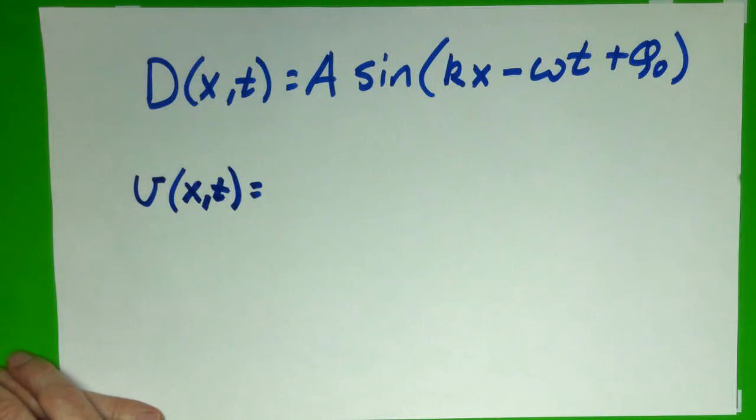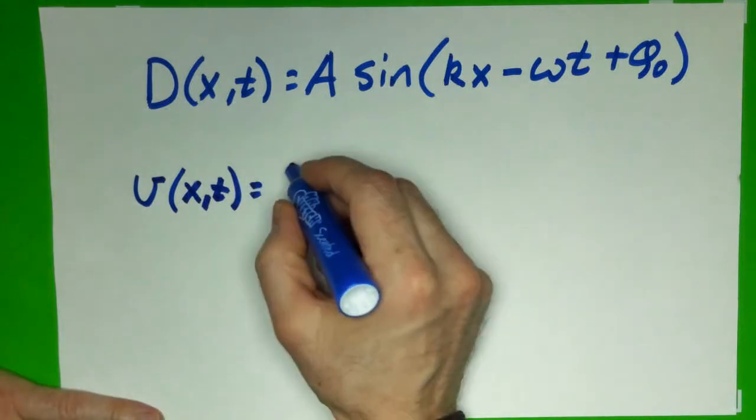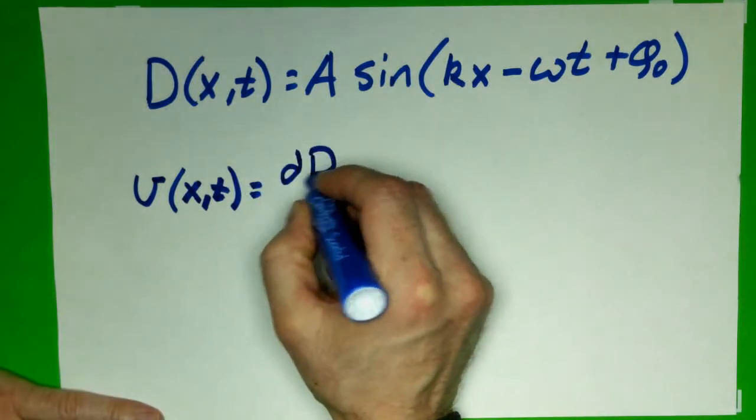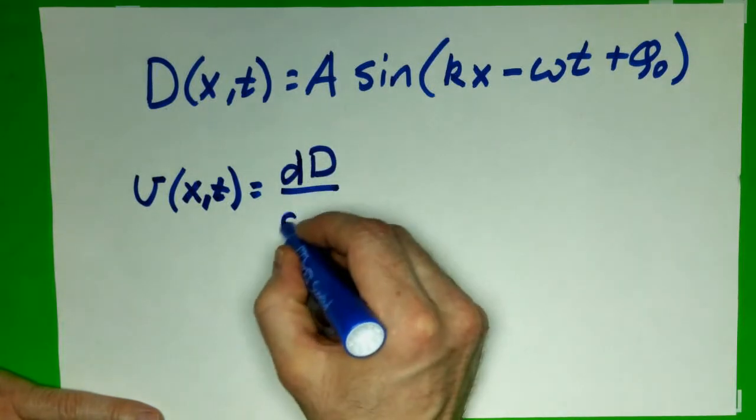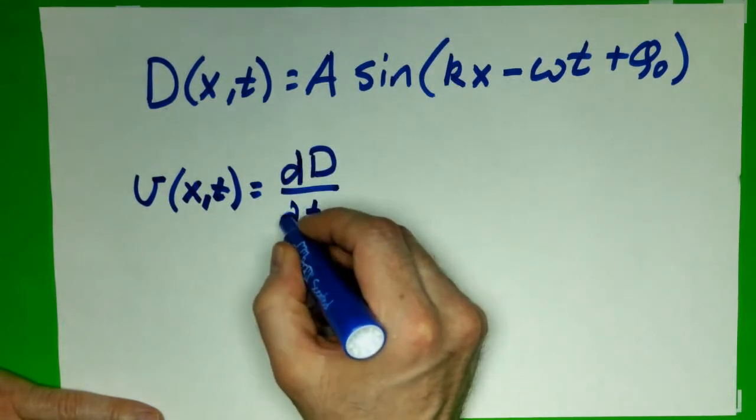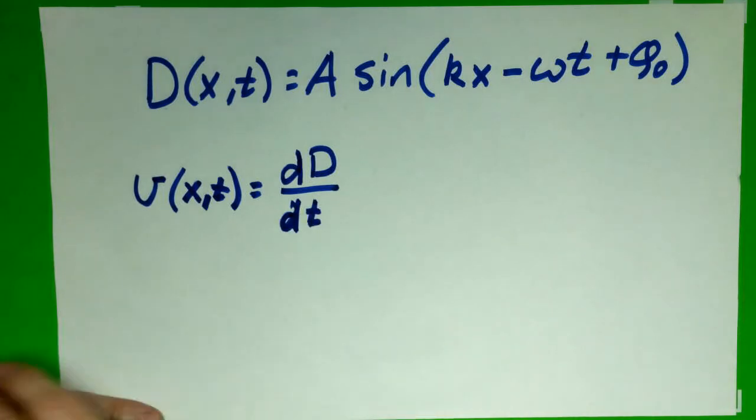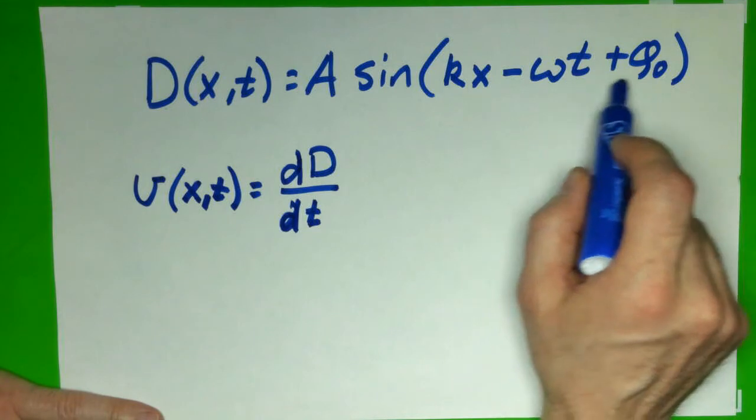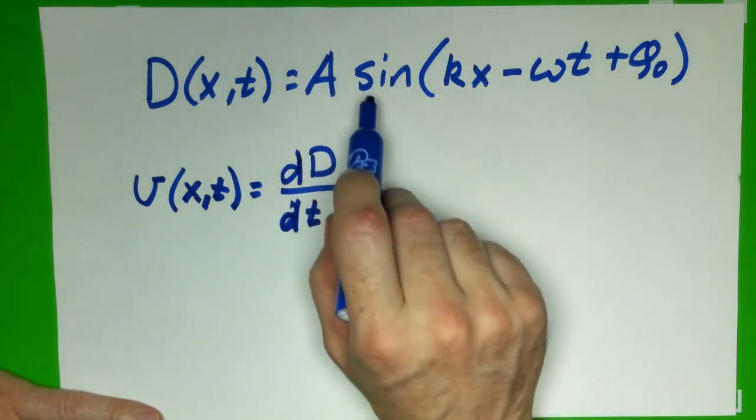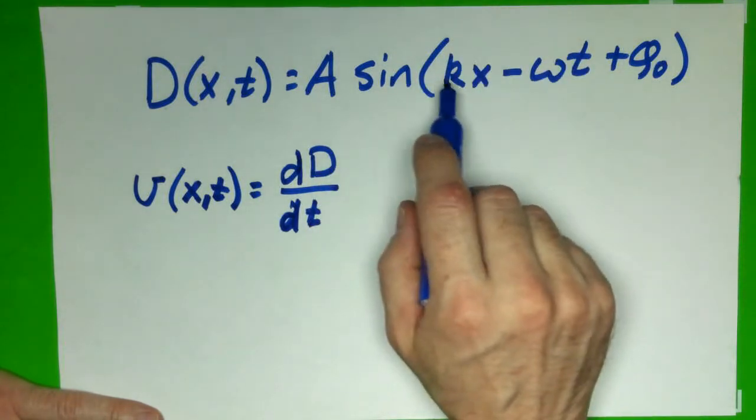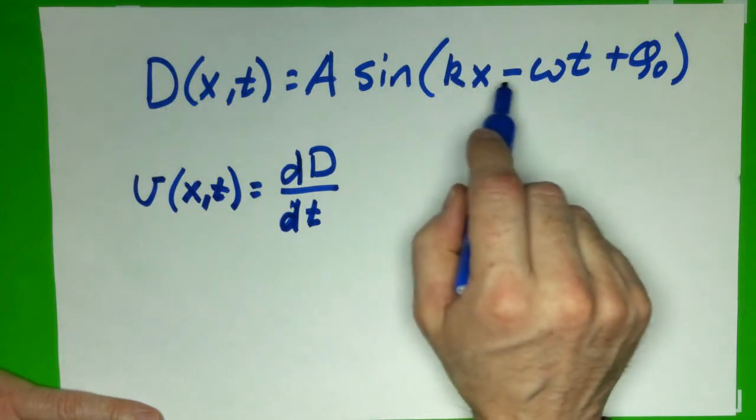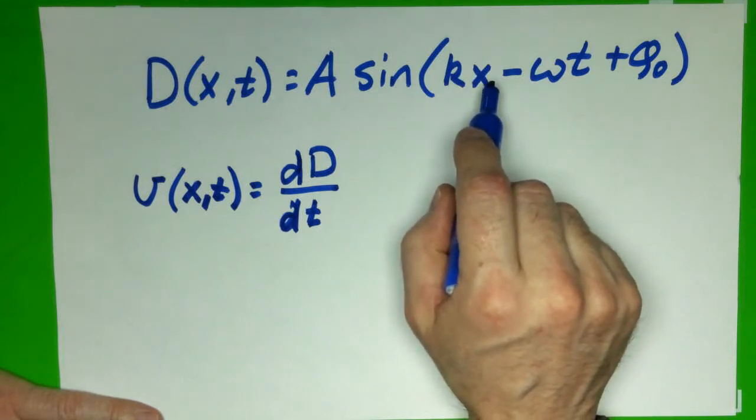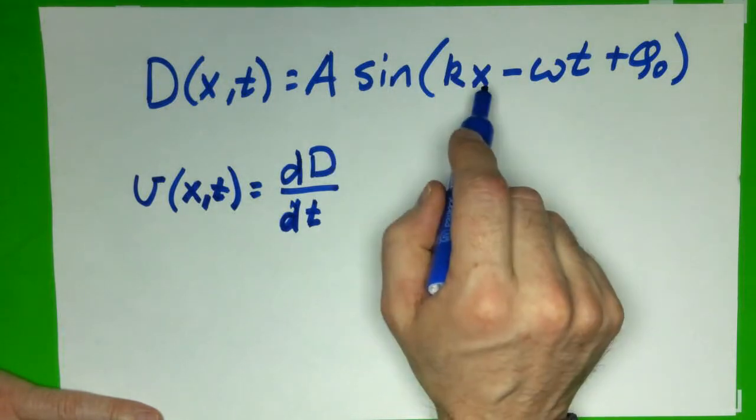So let's do that together. Derivative of D with respect to time. Where does time occur? It occurs right here, in the sine function. So we're going to have to do a chain rule. We'll just call this some preliminary variable, we can call it y, so sine of y.